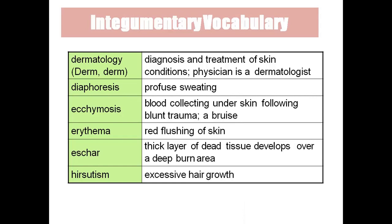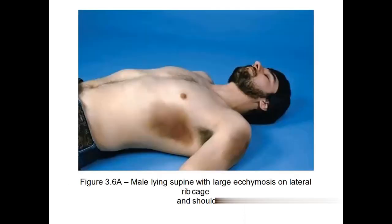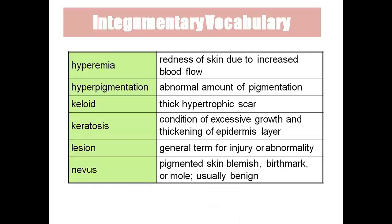Ecchymosis shows redness under the skin due to blunt trauma. Contusion is similar but smaller — for example, bumping into a bed or chair produces a small red area called contusion; if the area is bigger, we call it ecchymosis. Hyperemia means redness of the skin due to increased blood flow. Hyperpigmentation means abnormally more pigmentation — darker skin.